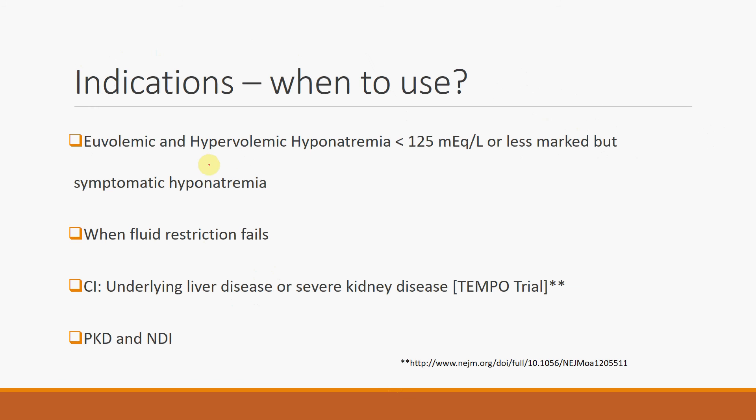So this drug, the Vaptans, are used primarily in patients with euvolemic and hypervolemic hyponatremia with serum sodium less than 125. A patient with a serum sodium around 125, maybe a little bit higher, can also be used on, but those patients should be more symptomatic hyponatremia that we think of using the Vaptans because they really are a very costly drug.